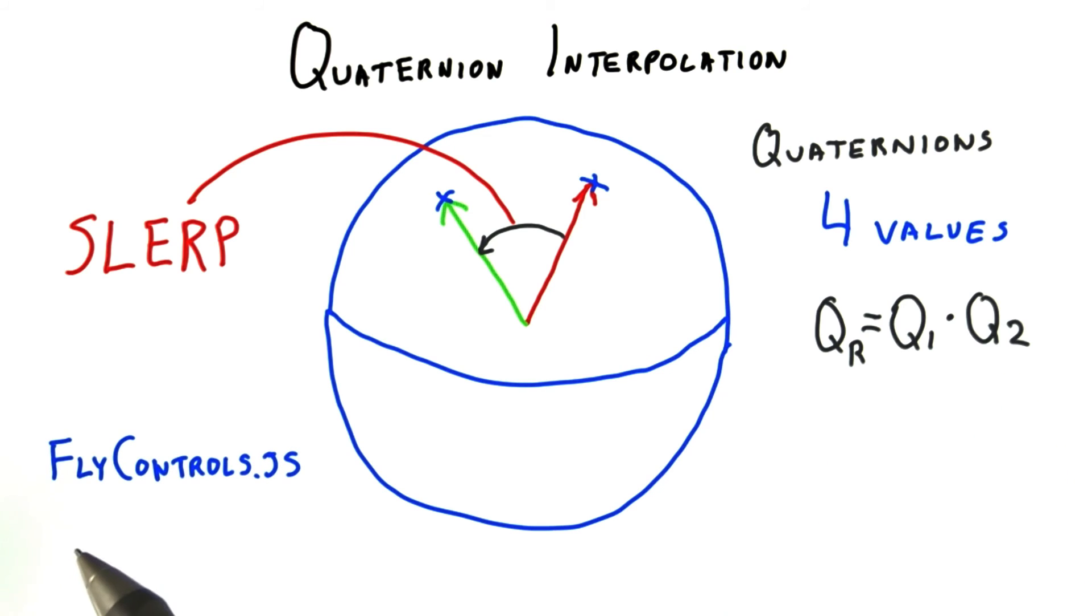Quaternions are often used for animation paths or flying controls. In fact, Three.js uses them for just that class, flycontrols.js. That said, you do have to be careful when using quaternions with cameras in that the up vector will not be maintained throughout the slerp and you'll need to reorient.